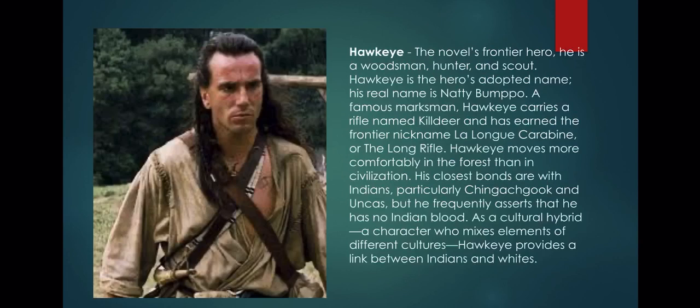Hawkeye is the novel's protagonist and hero — a woodsman, hunter, and scout. His real name is Natty Bumpo. He carries a rifle nicknamed Killdeer and has earned the frontier nickname La Longue Carabine, or the Long Rifle. Hawkeye moves more comfortably in the forest than in civilization. His closest bonds are with the Indians, particularly Chingachgook and Uncas, but he frequently asserts he has no Indian blood. As a cultural hybrid — a character who mixes elements of different cultures — Hawkeye provides a link between Indians and whites.